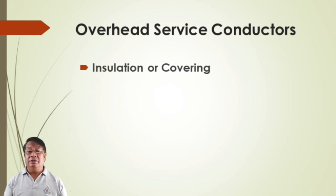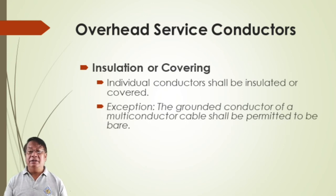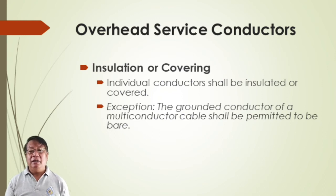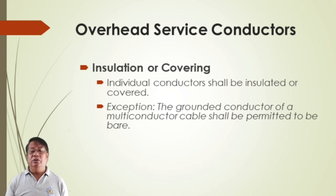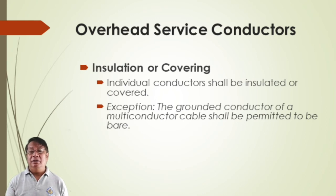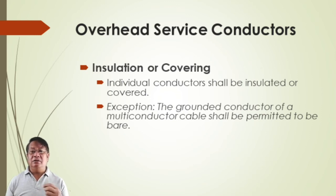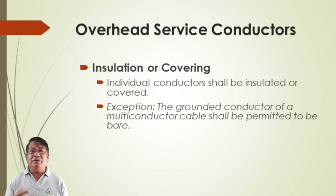The grounded conductor is permitted to be bare or without insulation — or it may have green, white, or gray-striped insulation. For size and rating, the conductor shall have sufficient capacity to carry the load current and adequate mechanical strength. For underground service conductors, the grounded conductor shall be permitted to be uninsulated: bare copper used in a raceway, or bare copper for direct burial where bare copper is judged suitable for soil conditions.